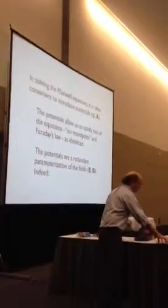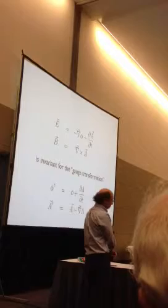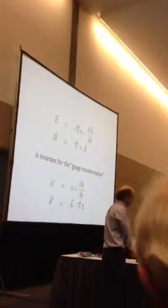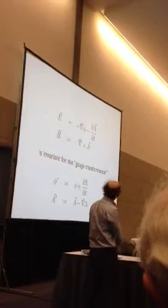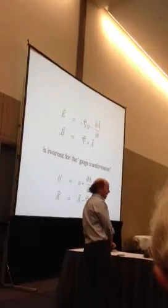These potentials are a redundant parameterization of the fields E and B. Indeed, this is the equation for that. Since B is a curl, its divergence is zero—that's the no monopoles equation. The redundancy is that you get the same fields for any combination of vector and scalar potentials that are modified by an arbitrary space-time function lambda and taking the appropriate gradients.